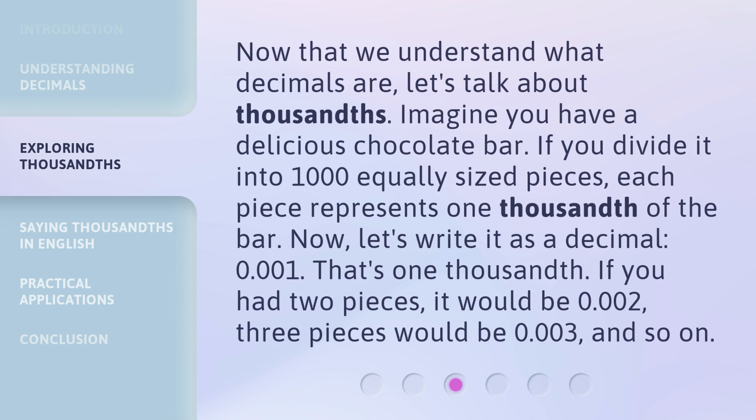Now that we understand what decimals are, let's talk about thousandths. Imagine you have a delicious chocolate bar. If you divide it into one thousand equally sized pieces, each piece represents one thousandth of the bar. Now, let's write it as a decimal: 0.001. That's one thousandth. If you had two pieces, it would be 0.002. Three pieces would be 0.003, and so on.